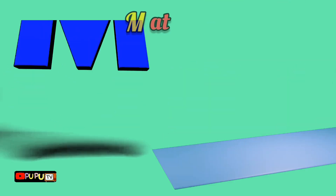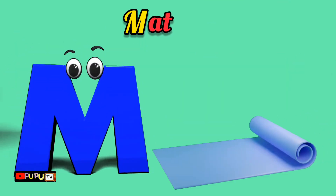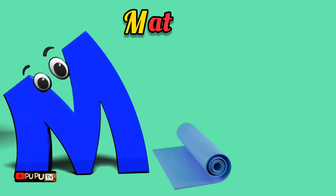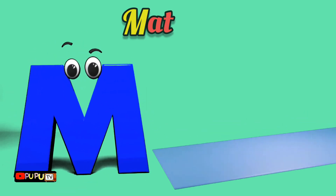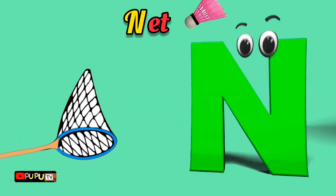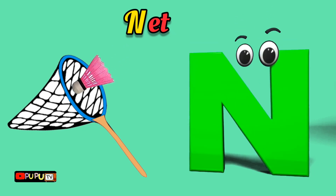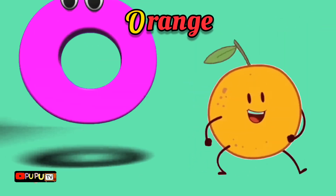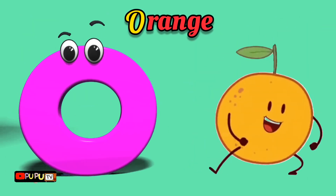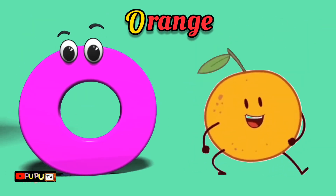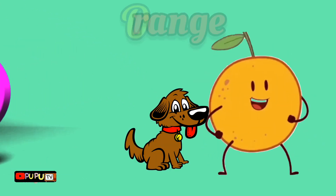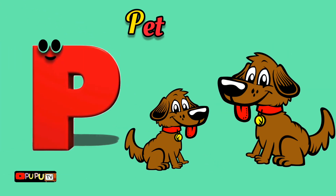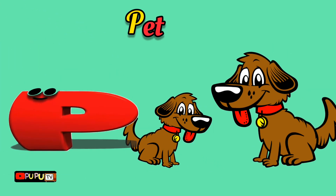M is for Mat, M-M-Mat. N is for Net, N-N-Net. O is for Orange, O-O-Orange. P is for Pet, P-P-Pet.